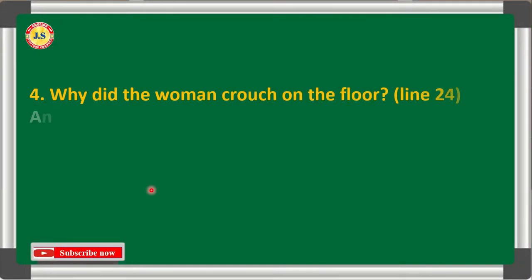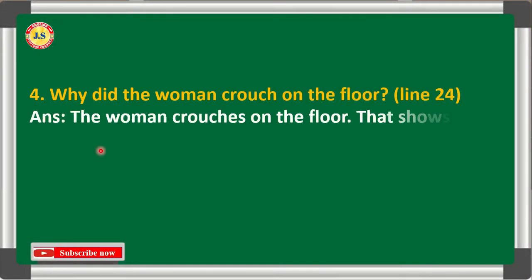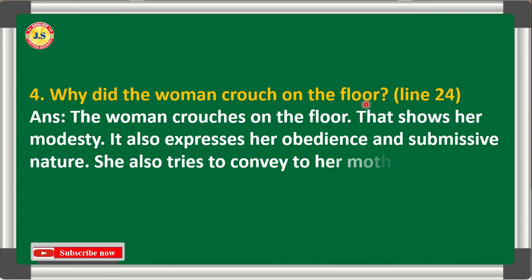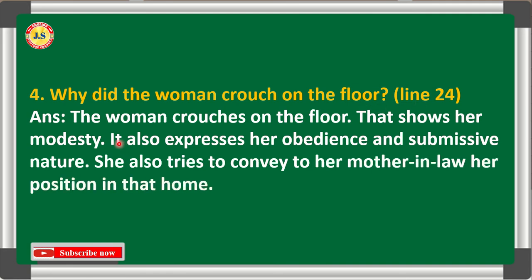She is not only one woman — there are many women who suffer and are harassed by their mother-in-law all over India. Question 4: Why did the woman crouch on the floor? Answer: The woman crouches on the floor — that shows her modesty. She never scolds her mother-in-law, she behaves very calm and quiet. She also expresses her obedience and submissive nature, and tries to convey her position in that home without uttering a single word against her mother-in-law.